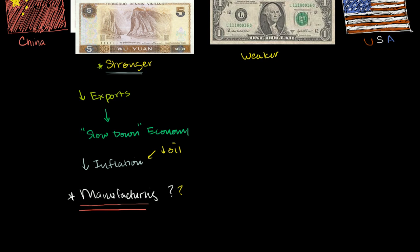Let's think about what might happen in the United States if the dollar is allowed to weaken relative to the yuan. The most obvious thing is that Chinese imports will become more expensive.